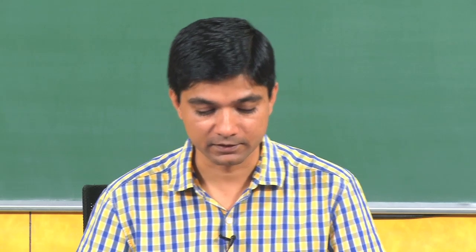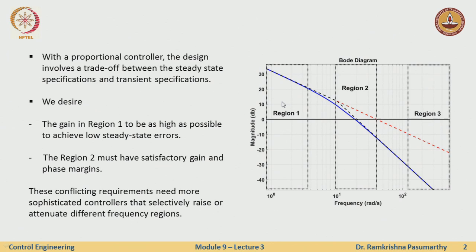In this module, this will be a rather smaller lecture where we will learn how to design lag compensators via Bode plots. To recall where we started: in the frequency domain we classified the entire frequency range into three regions — the low frequency, the middle frequency, and the high frequency range. What we desire is that the gain in region 1 should be as high as possible so as to achieve low steady state errors.